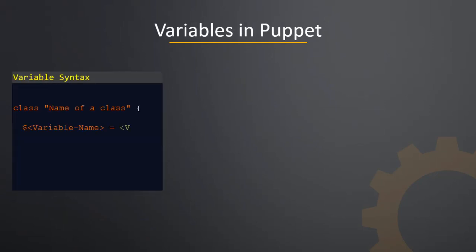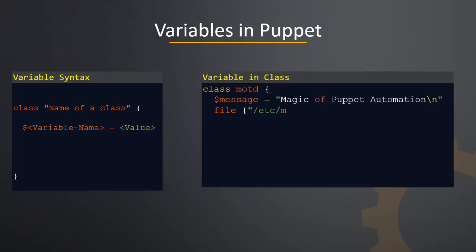What are Variables? Variables are an essential part of any scripting language or automation tool. They are used to store values so that they can be accessed later. Puppet uses variables to make reuse of the same parameter over and again, to make Puppet code management more generic. Variables are always prefixed with a dollar sign and values are assigned by an equal to sign.